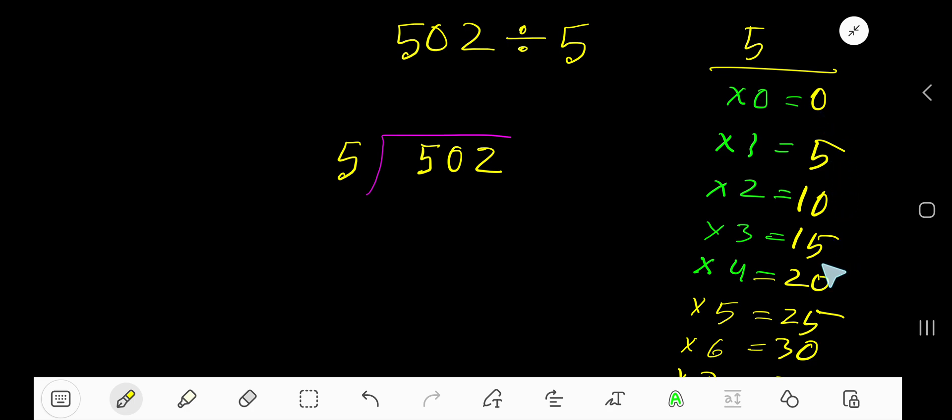5 goes into 5 how many times? 5 goes into 5 one time. Write 1. 1 times 5 is 5. Subtract, you are getting 0. Bring down this 0.